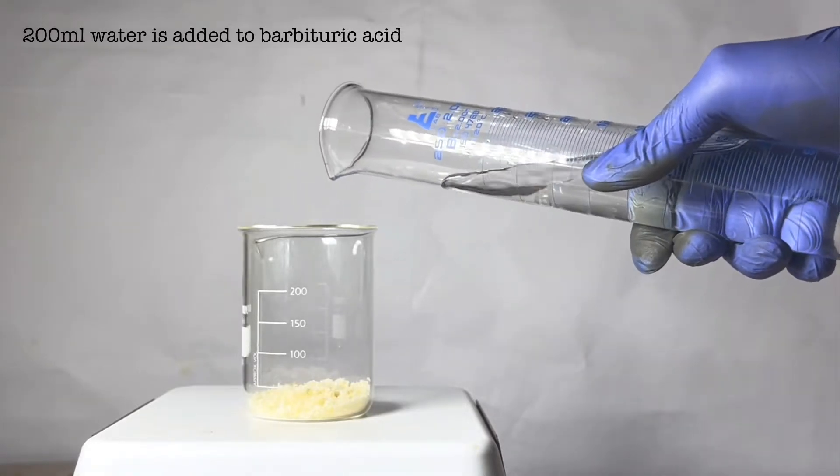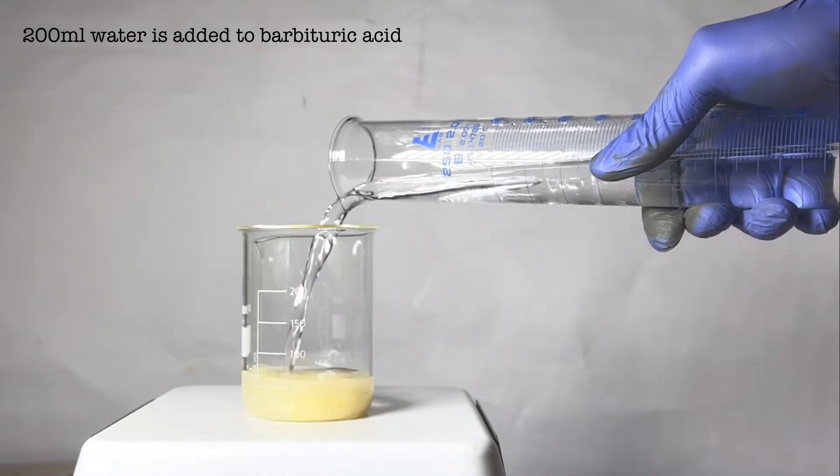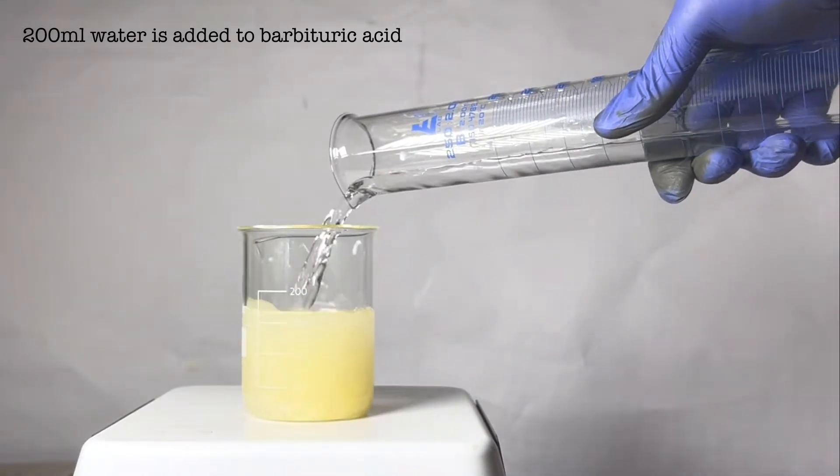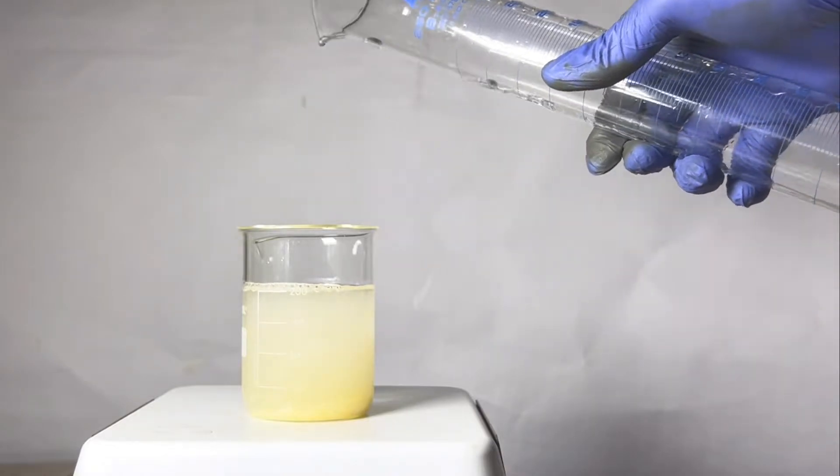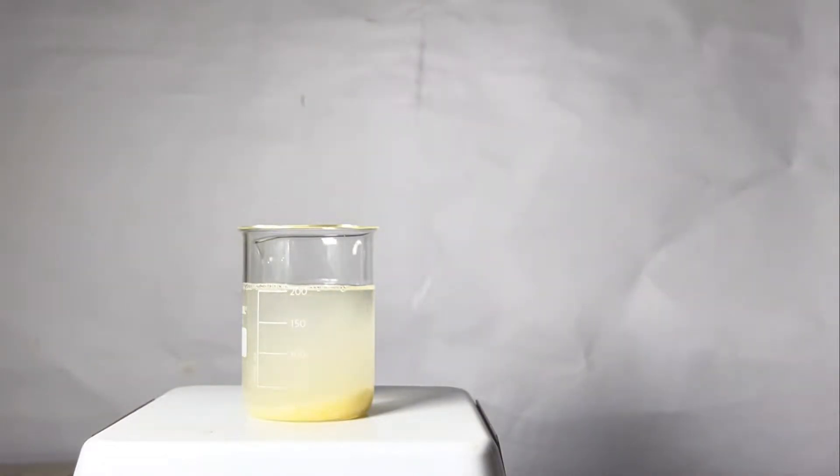200 ml of water was added to the beaker. Barbituric acid has decently high solubility in water, so it easily dissolves. After a few minutes of continuous stirring and gentle heating, we are left with a clear pale yellow solution.